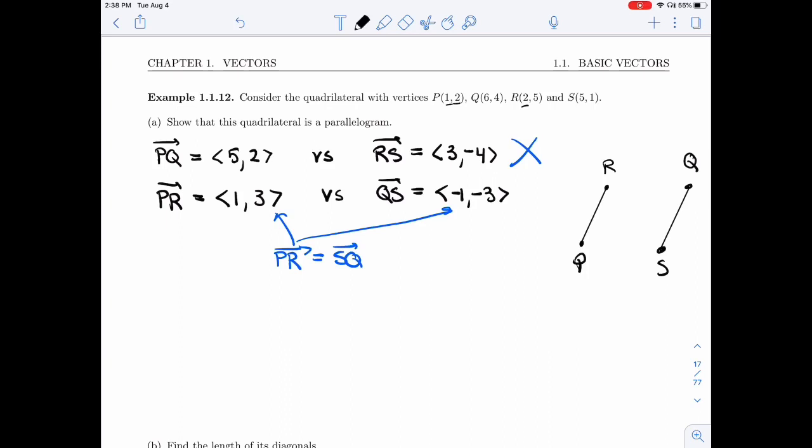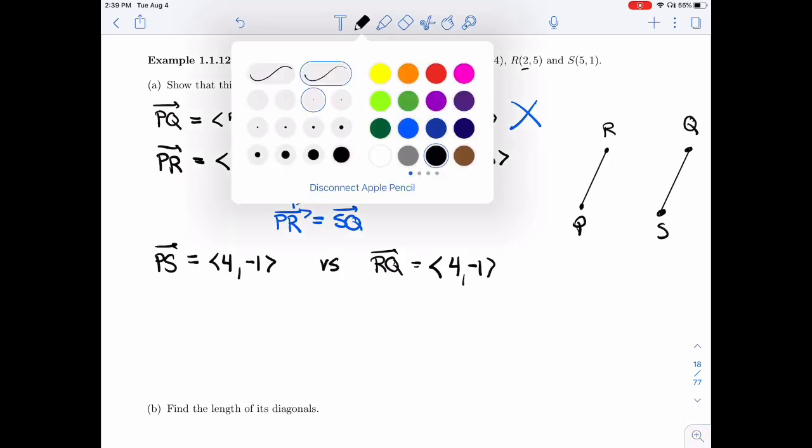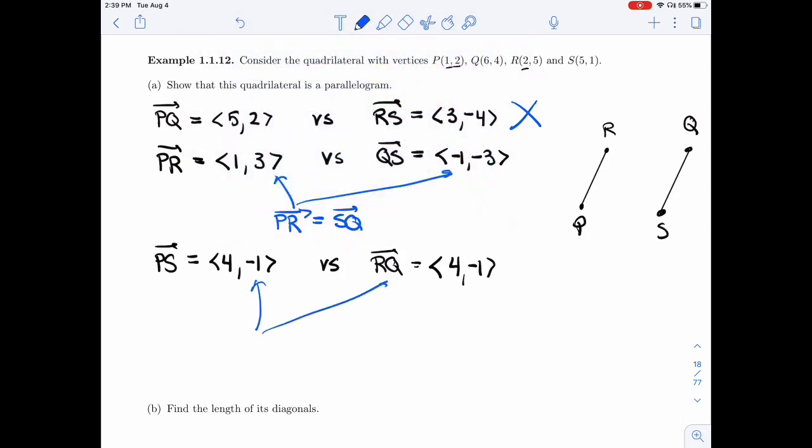So let's double check that the second pair of sides work as well. So let's see what PS gives. So P to S, 1 to 5 is 4. 2 to 1 is minus 1. So that's PS. And then if I look at this picture, PS should be the same as RQ. So from R to Q, I get 2 to 6, I get 4. 5 to 4, I get minus 1. Perfect. And so these two are equal.